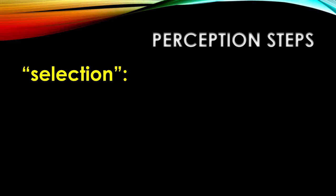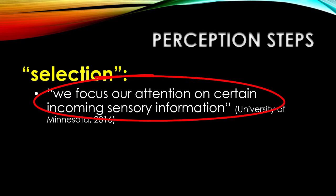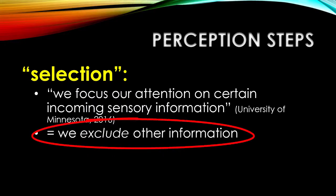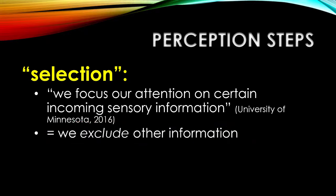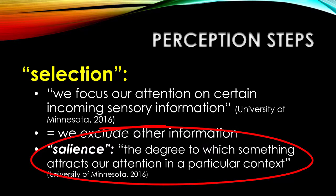The first step is selection. We know that we can't possibly make coherent sense out of all of the sensory data that we encounter every day — there's just too much. So what we do is we focus our attention on certain incoming sensory information, whether it's conscious, semi-conscious, or in some cases even subconscious. We end up making choices about what we intend to recognize in our sensory reality. Those things that draw and keep our attention possess what many psychologists refer to as salience — the degree to which something attracts our attention in a particular context.